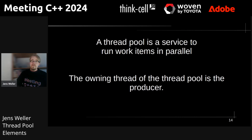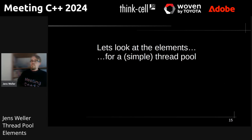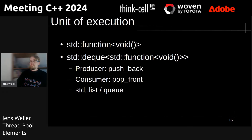The thread pool is a service to run work items in parallel, and the owning thread of the thread pool is the producer from a simplified point of view. Of course, you can have multiple threads share a reference or pointer to your thread pool. Qt, for example, has a global thread pool which you can just create an instance to and then access it, or you can create your own thread pool as a local variable.